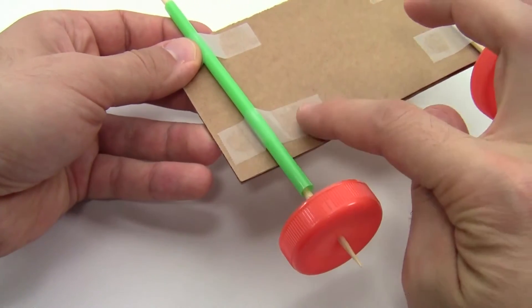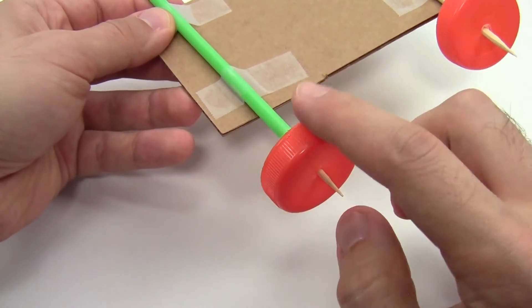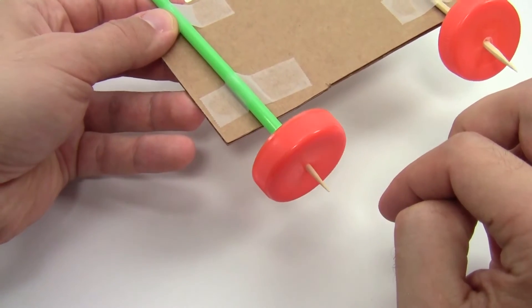Here, however, a straw is taped to the piece of cardboard, and a wooden skewer is inserted through the straw. The wheel is fixed to the wooden skewer, so the entire axle spins along with the wheel.